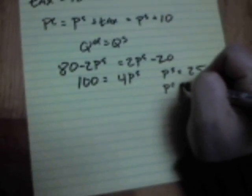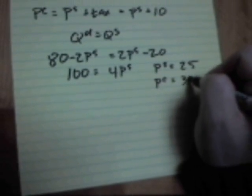What do consumers pay? Well, they pay $25 goes to the producers, 10 bucks goes to the government. Consumers pay $35 in total.